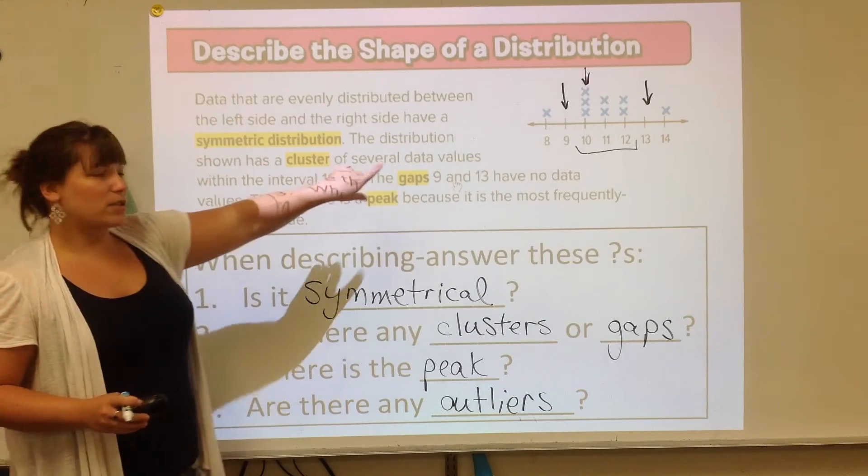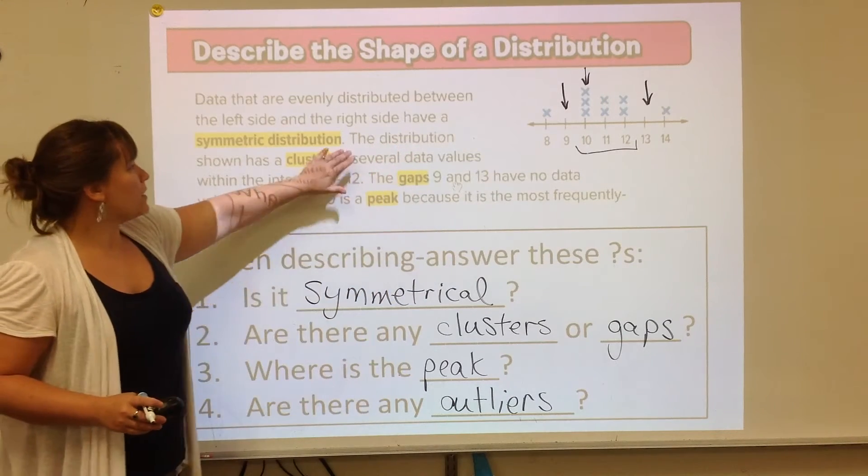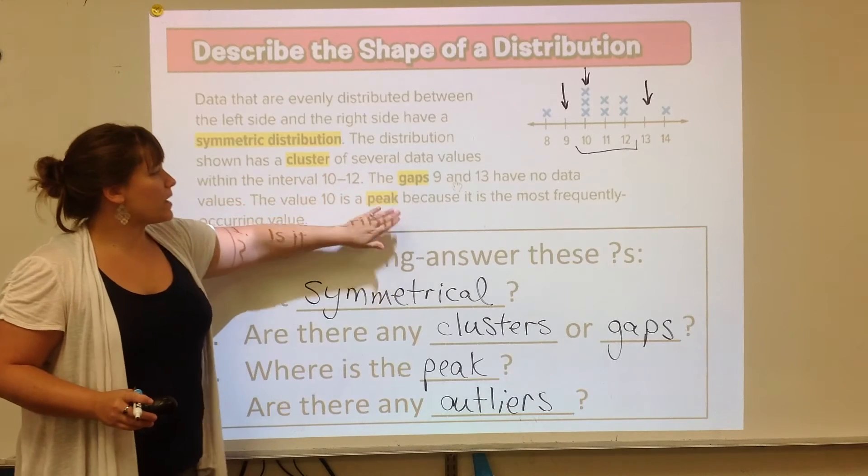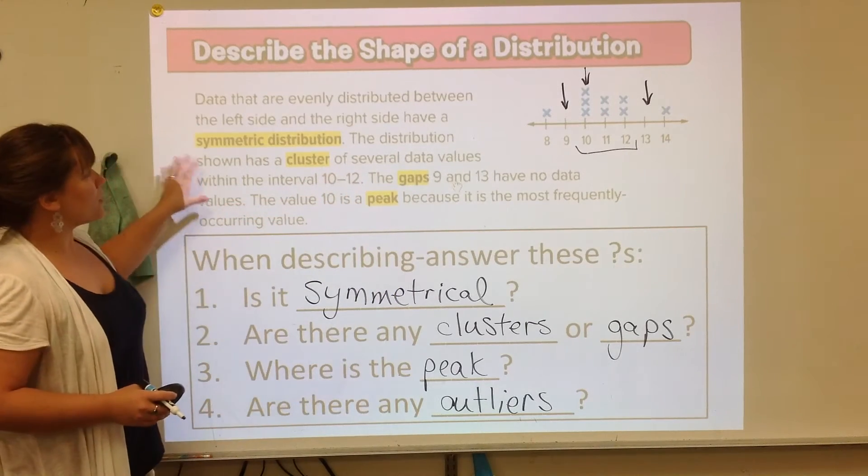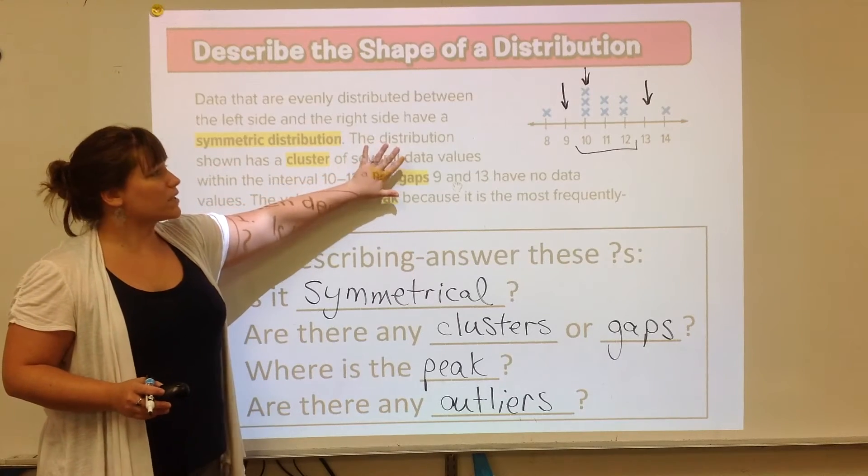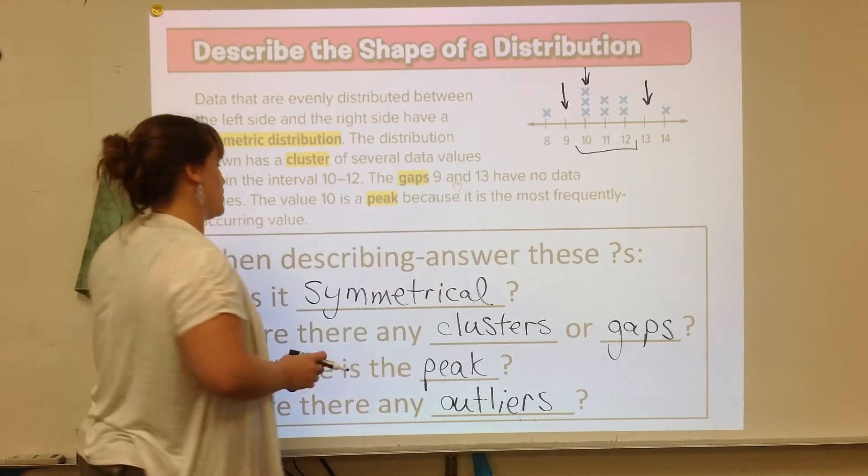So again, this is an example using a line plot. They talked about the cluster, they talked about the gaps, and the peak, and there are no outliers. The thing that this example right here didn't say is that it's not symmetrical. I'm going to show you another couple examples.